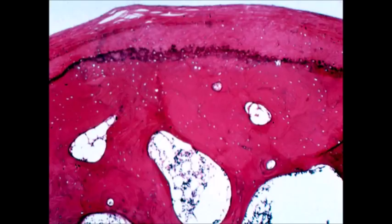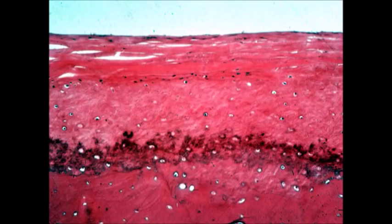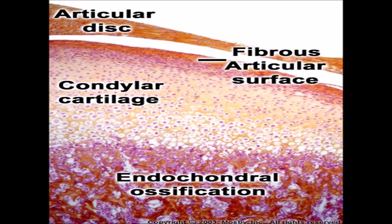In these additional images we can again identify the same layers: the articular zone, the proliferative zone, the fibrocartilaginous zone, the calcified cartilage, and the bone.